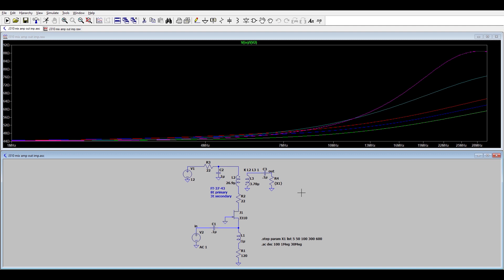This second simulation takes a closer look at how the input impedance responds when various output load impedances from 5 ohms to 600 ohms are applied. The input impedance never gets worse than about 88 ohms, and for most of the range of frequencies and loads, it's quite a bit closer to 50 ohms. So that's pretty solid performance.